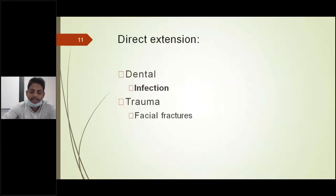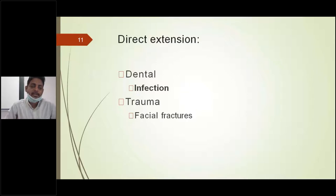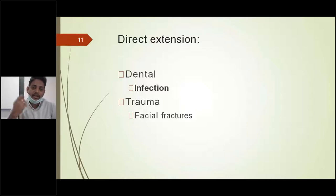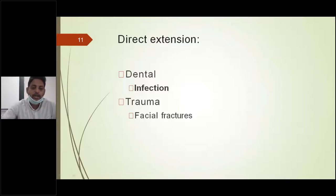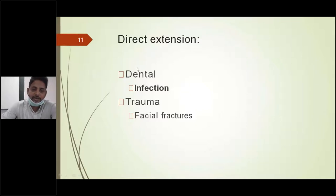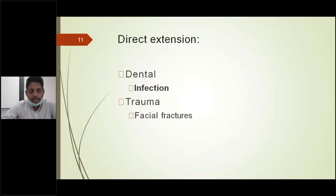The third etiology is direct extension. The floor of the maxillary sinus is closer to the dental region. So any dental processes — like extraction of a tooth or any dental procedures — may spread infection into the maxillary sinus because the floor may be weakened at the extraction area, and inadvertent oroantral communication can also occur. Apart from that, trauma or facial fractures — including penetrating fractures — mean infections from soft tissues and facial structures may spread into the paranasal sinuses and lead to bacterial colonization and rhinosinusitis.